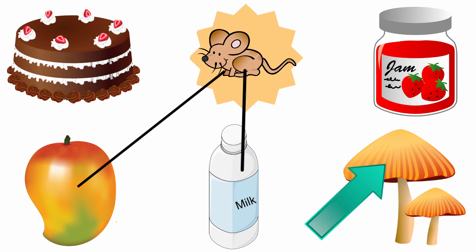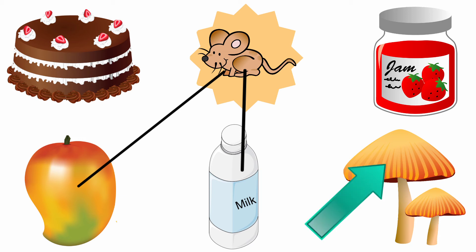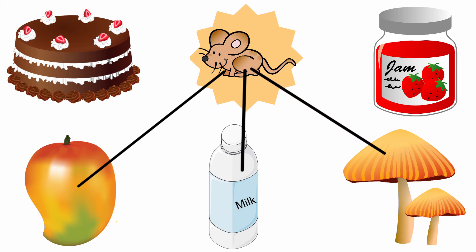The next one, mushroom. The beginning sound of the picture mushroom is M. And the sound of the letter M is M. The sound of the letter M and the beginning sound of the picture mushroom are the same. So, we are going to draw a line from mouse to mushroom.